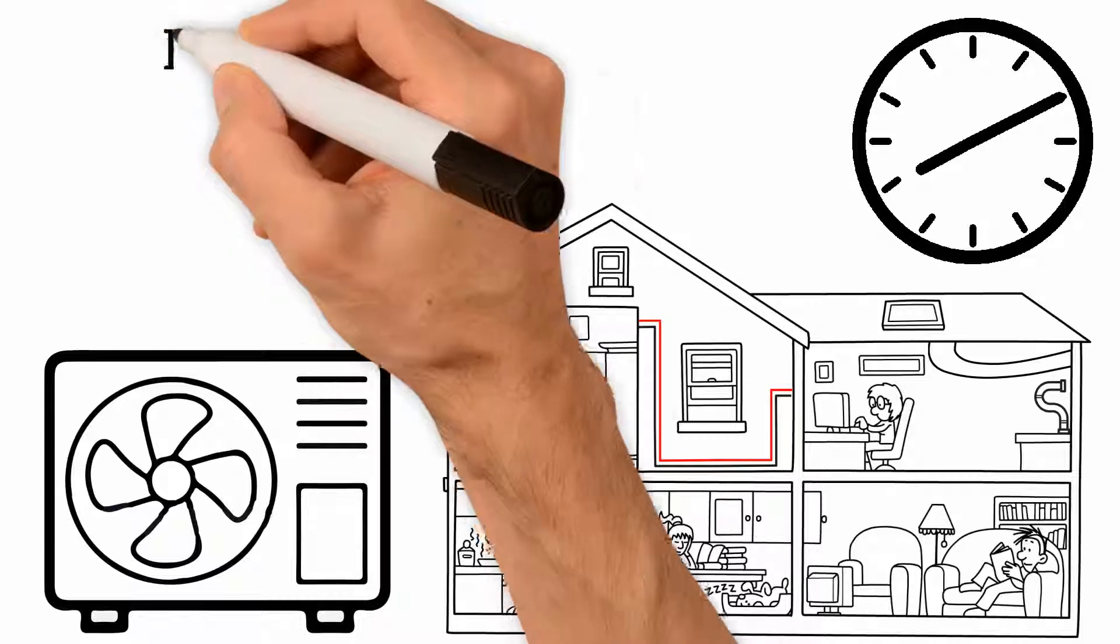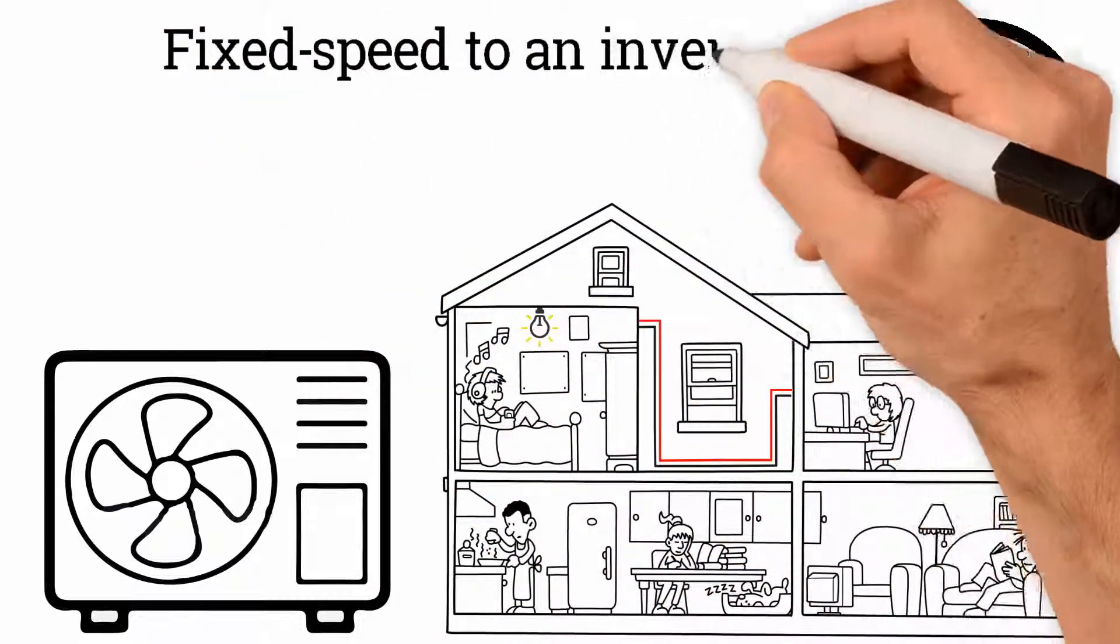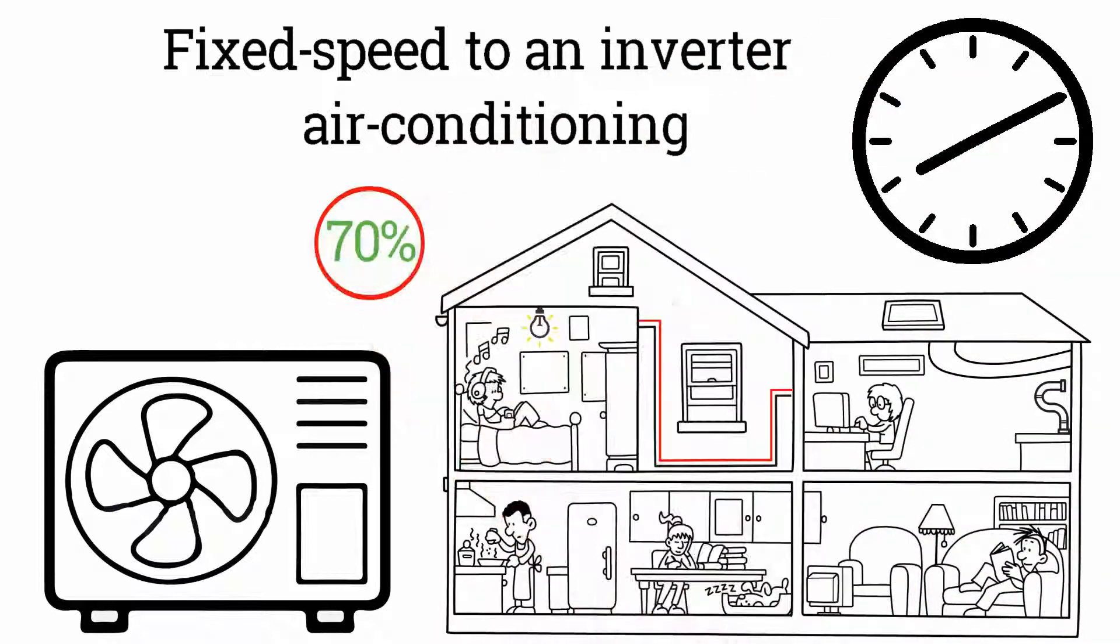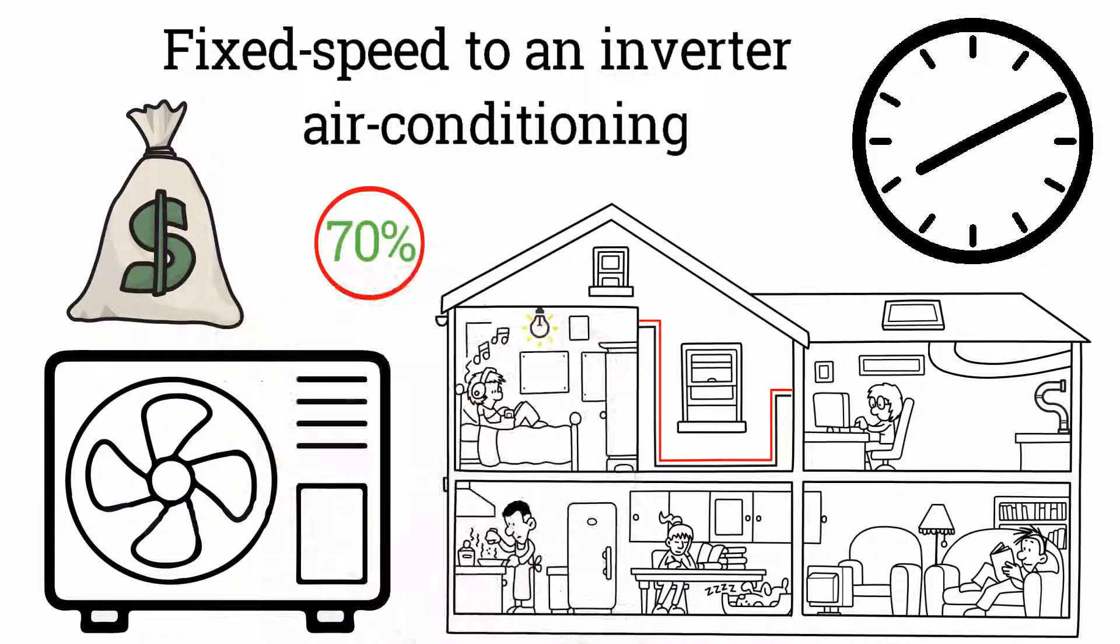After three hours of work, your air conditioning system will go from being an old fixed speed to an inverter air conditioning unit that saves over 70% power, saving you lots of money.